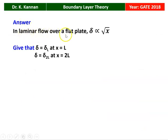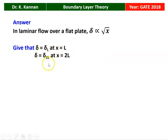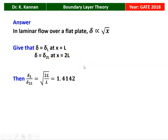For laminar flow over a flat plate, the boundary layer thickness delta is proportional to the square root of x. It is given that delta equals delta L at x equal to L, and delta equals 2 delta L at x equal to 2L. Then delta 2L divided by delta L equals the square root of 2L divided by L, which equals 1.4142.